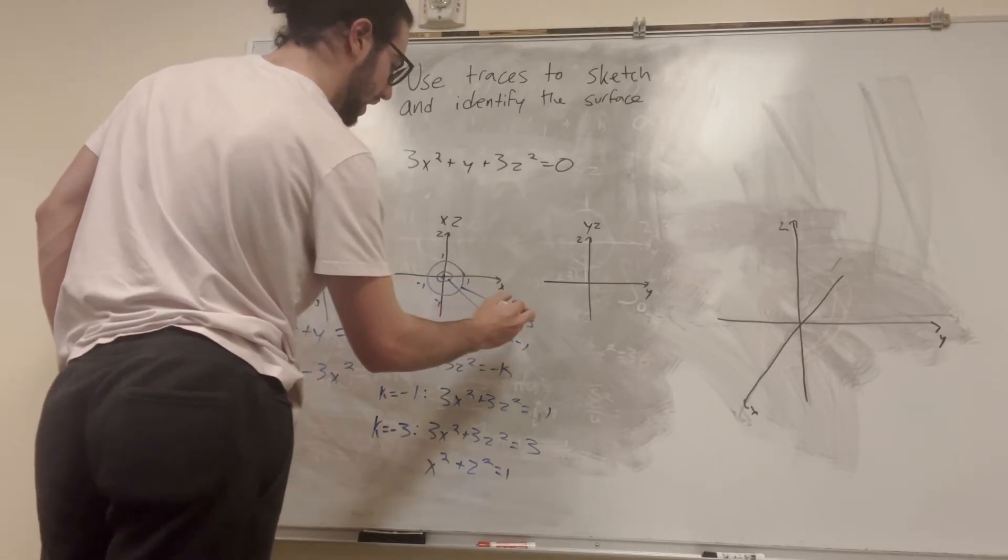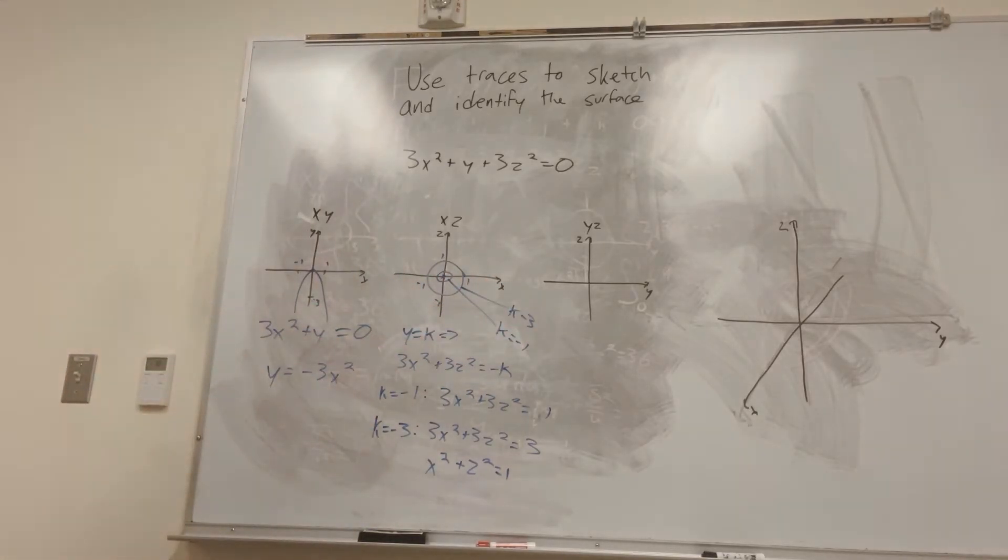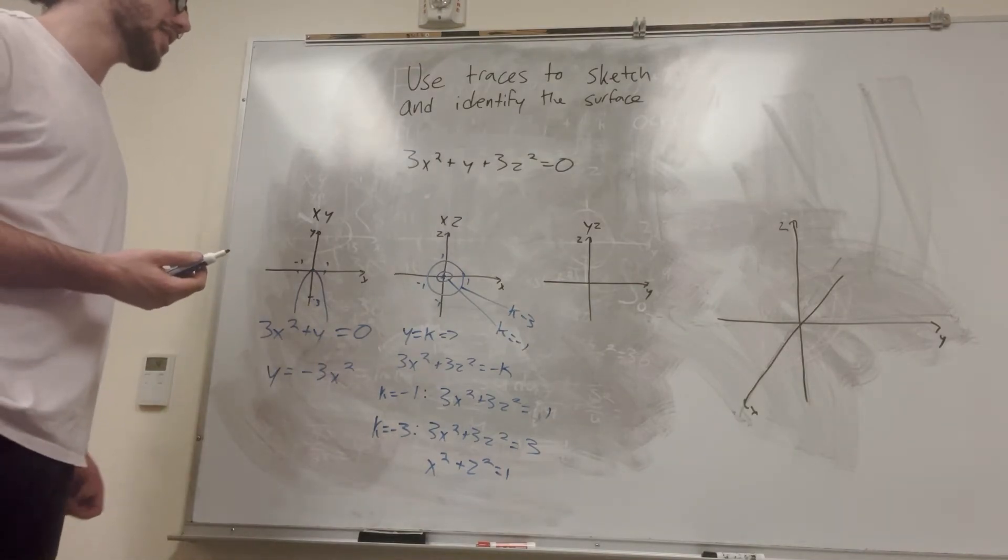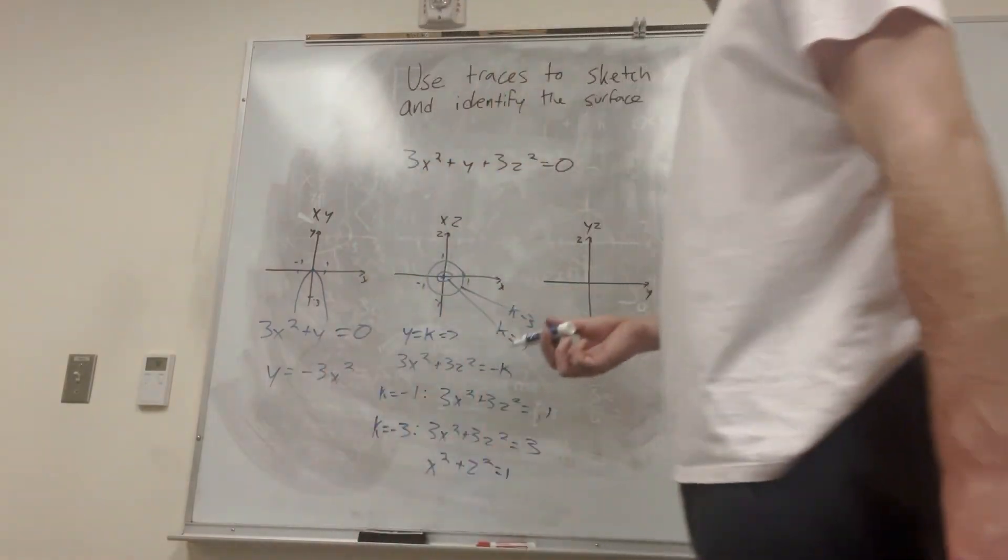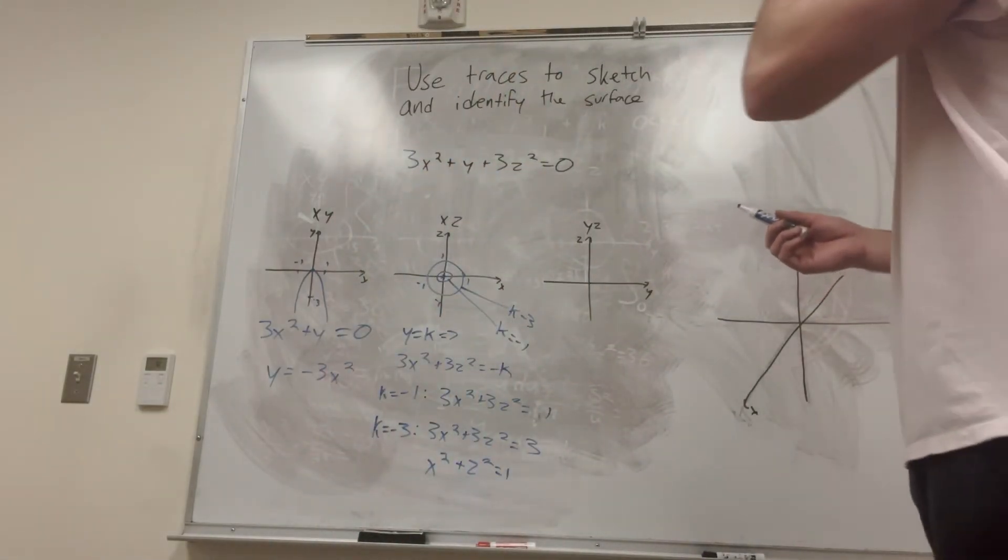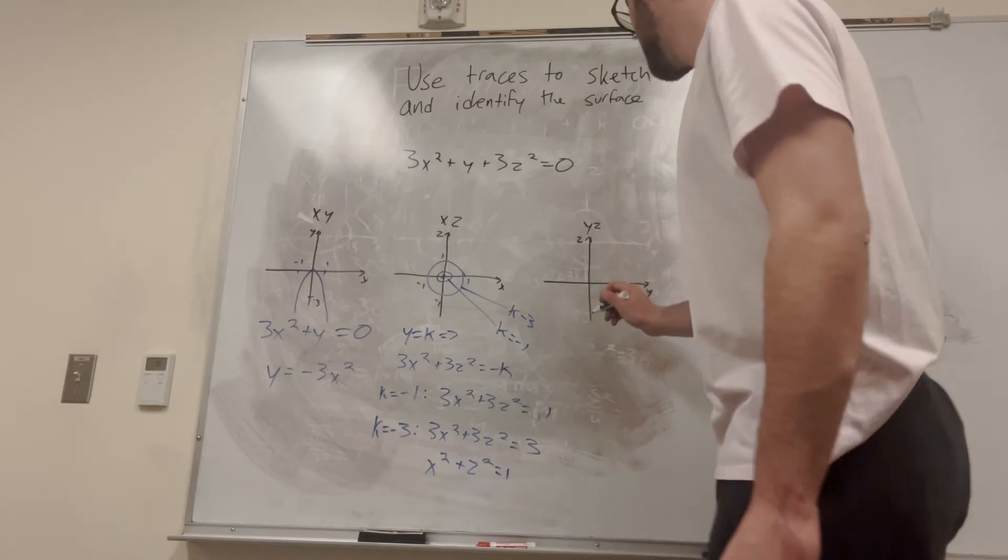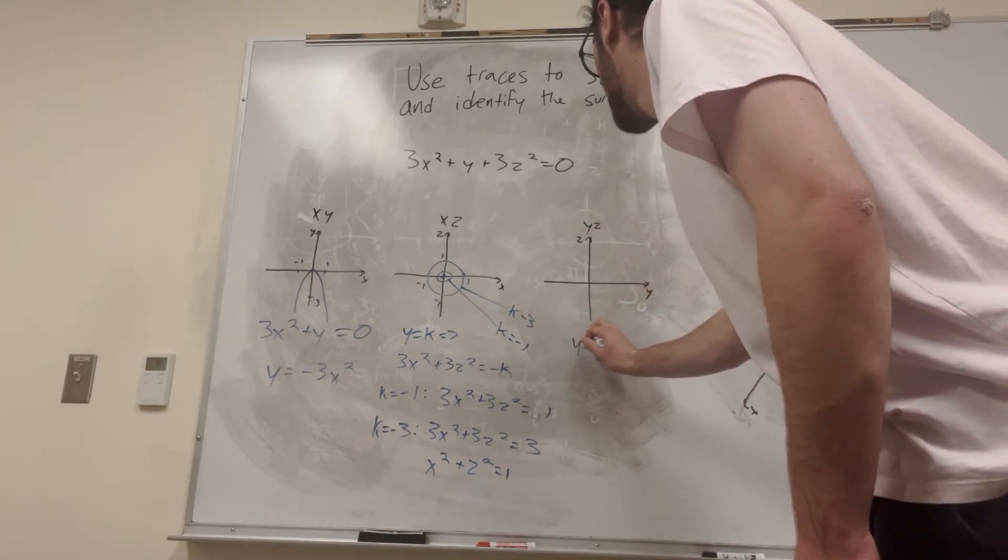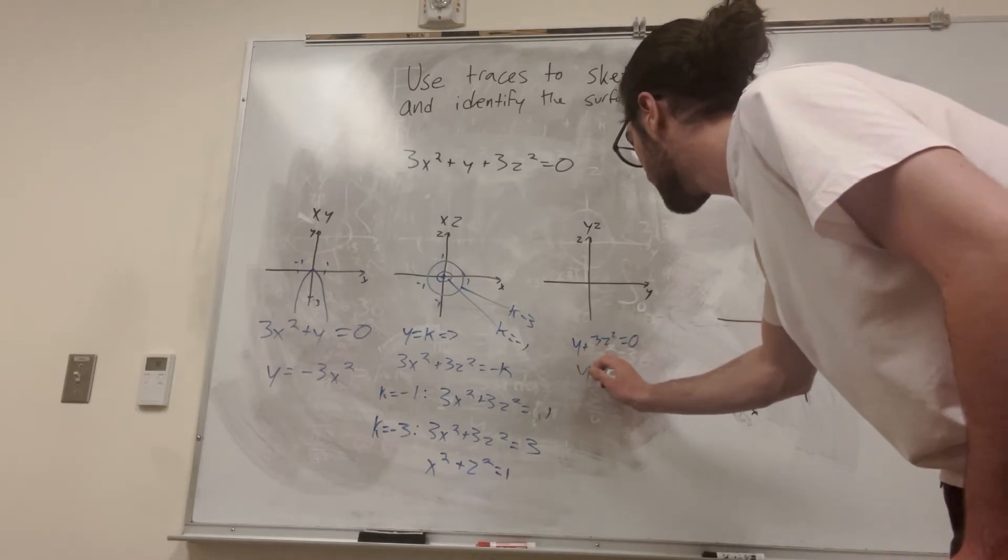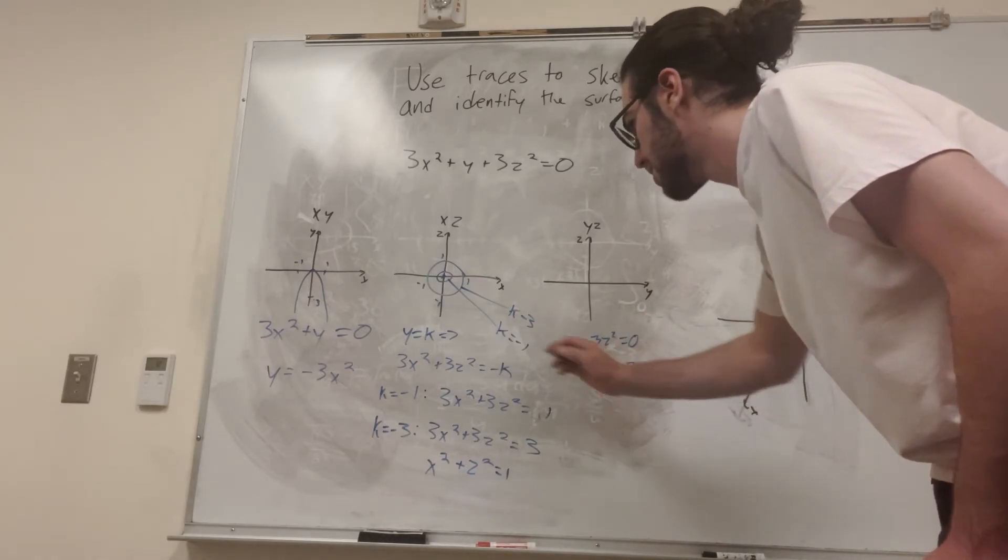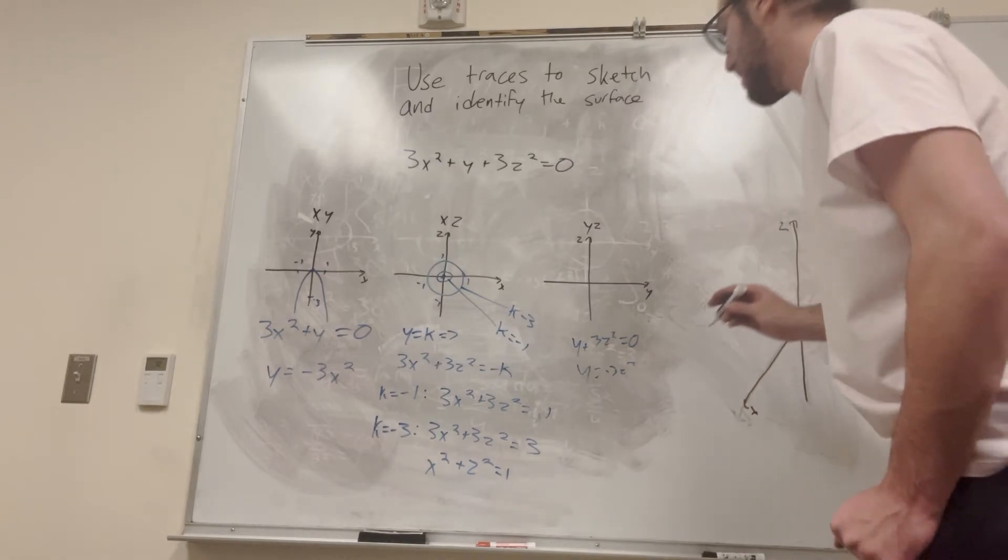This is when k is equal to negative 3. And you can basically say that's the word y and whatever, but it's just easier to use k in this equation. Alright, so let's go over to the yz plane. We have enough information we can hear to pretty much figure out what it's going to look like. So yz, it's going to be y plus 3z squared is equal to 0, or y is equal to negative 3z squared, which is basically the exact same thing we have for x except for the z this time.